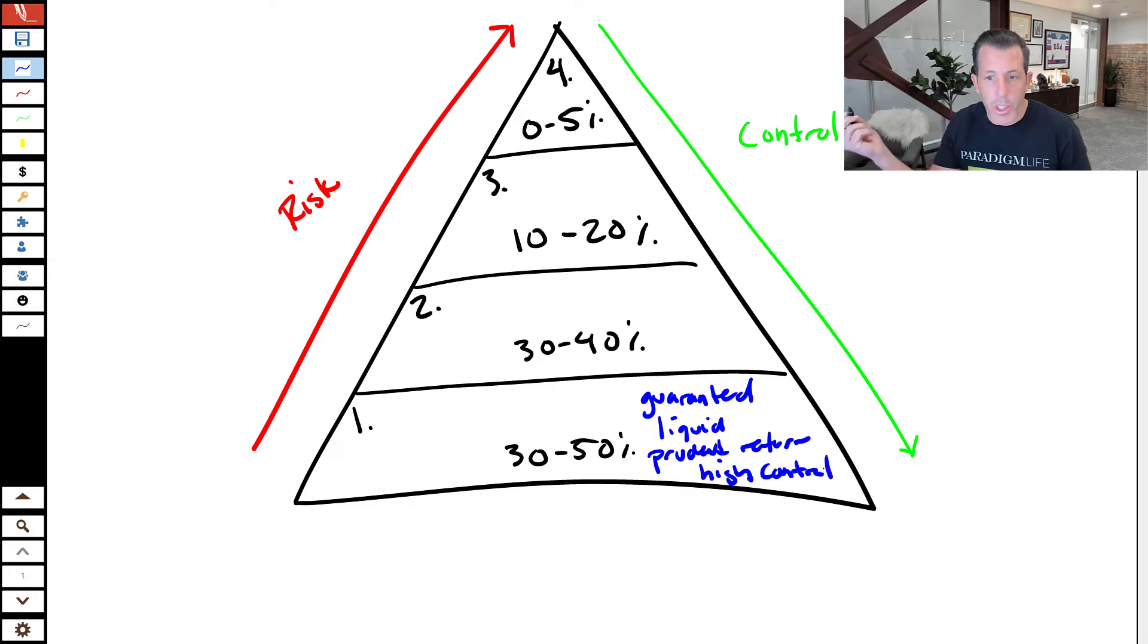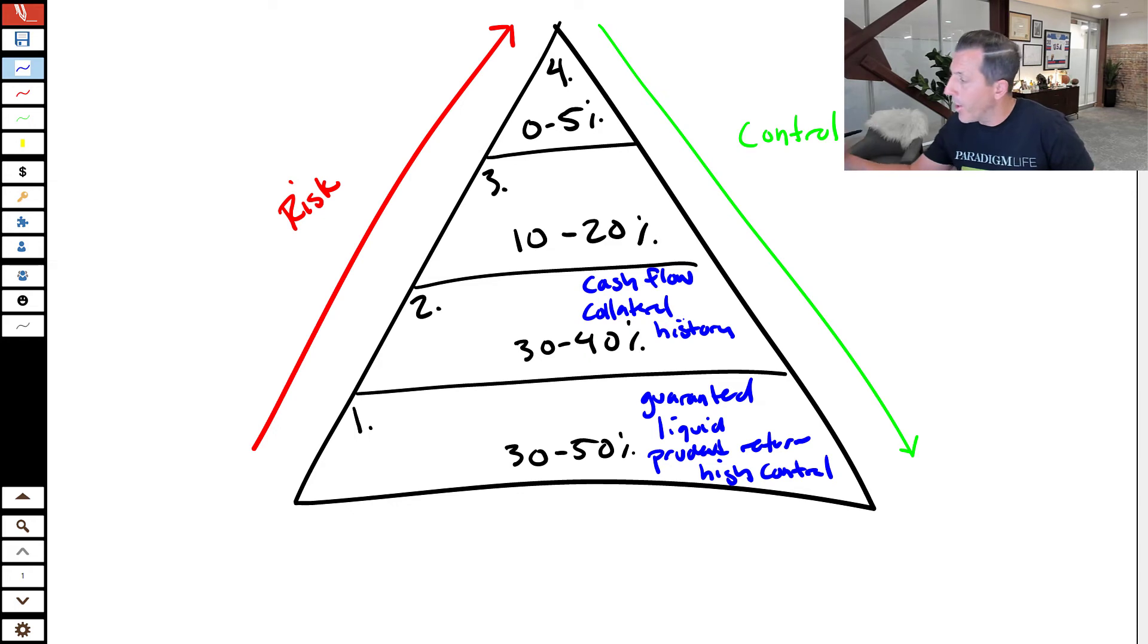This next tier, which is tier two, we like assets that produce cashflow. We like assets that have collateral associated with that. I would say that there's some historical consistency with this type of tier, meaning it's an asset class that's produced for a pretty long period of time and likely to continue to produce. And then in addition, obviously more control.